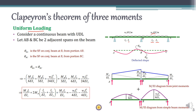The derivation is based on the conjugate beam method. The compatibility condition is maintained when the beam bends, meaning θ_BA must equal θ_BC. Using the conjugate beam method to find θ_BA and θ_BC, we assume the moment at the first support is M_A, at the second is M_B, and at the third is M_C. The simply supported bending moment of each span is a parabola: wL²/8 for the first span and w₂L₂²/8 for the second.